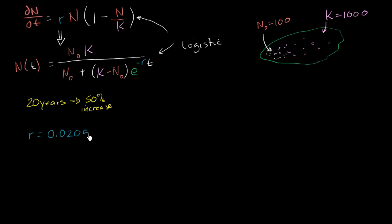So one way to think about it is every year I grow by 0.0205, then over 20 years as this compounds, I will have grown by 50%. That would be our r, essentially how much we are going to grow each year. We're going to assume that our t is in years.